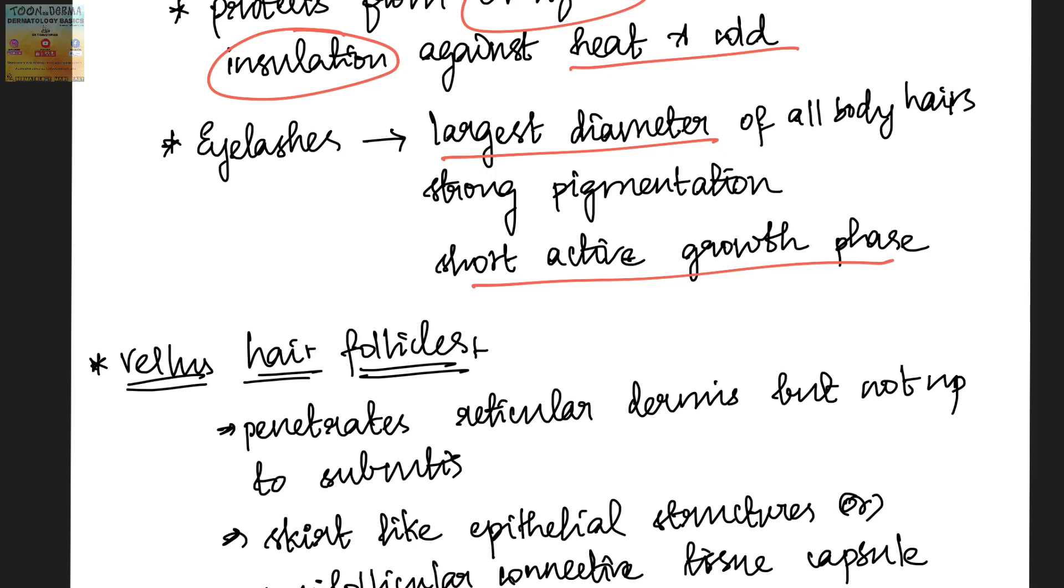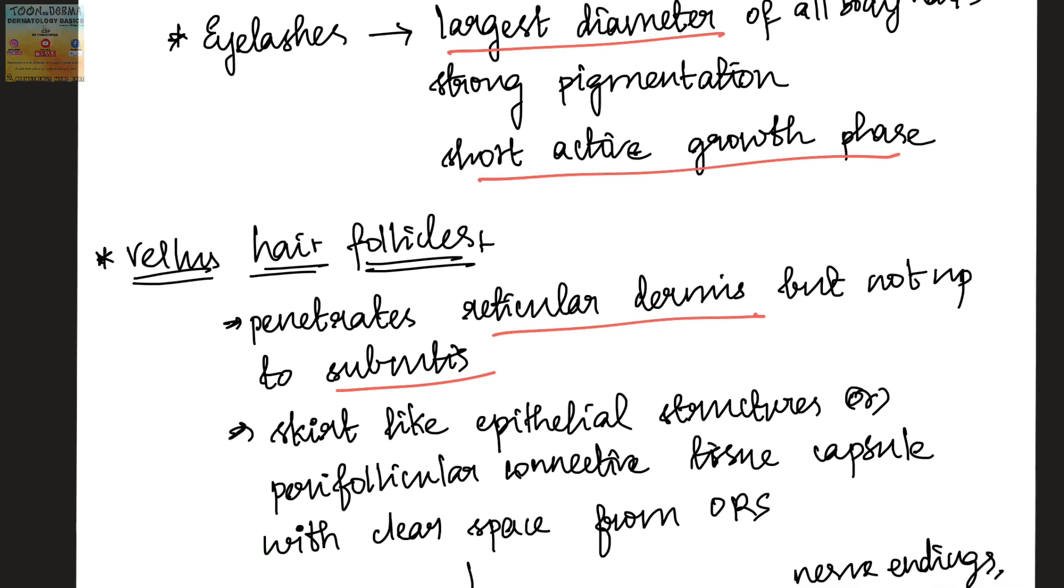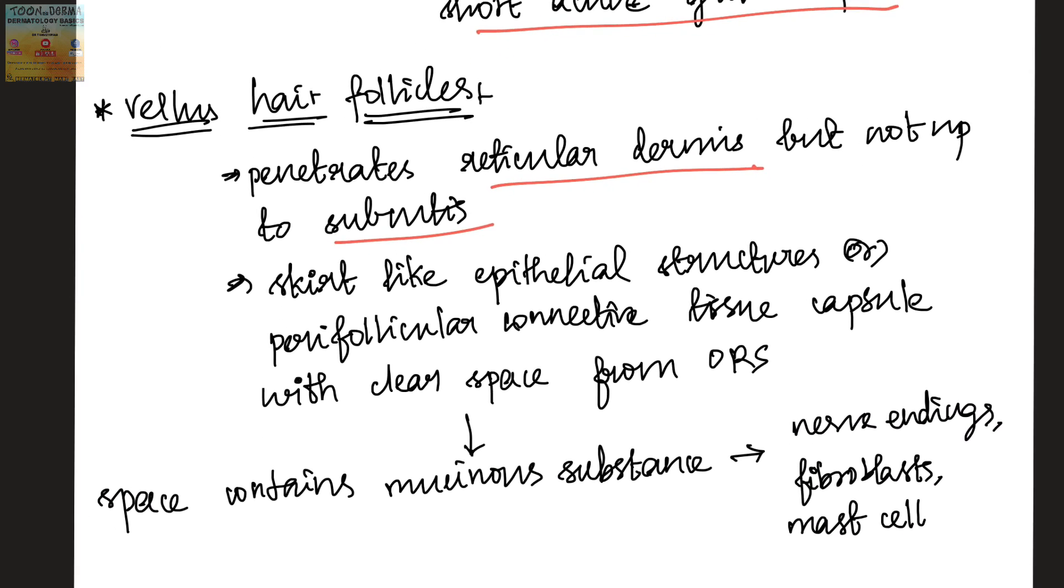Vellus hair penetrates the reticular dermis but does not go up to the subcutis. They have skirt-like epithelial structures or perifollicular connective tissue capsule with clear space from the outer root sheath. This space contains a mucinous substance containing nerve endings, fibroblasts, and mast cells.